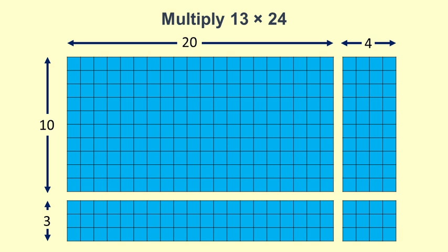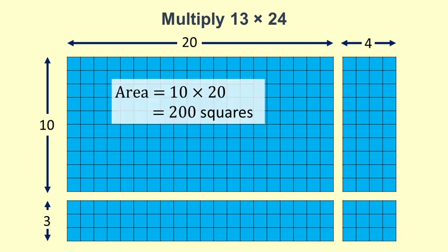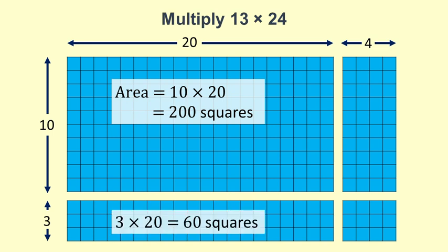You can see that we end up with 4 groups of squares. Finding the area of each of these groups involves basic multiplication. This first group is 10 by 20, which is 10 times 20, which equals 200 squares. The next one is 3 by 20, which is 60 squares. Then 10 by 4, which is 40, and finally 3 by 4, which is 12.